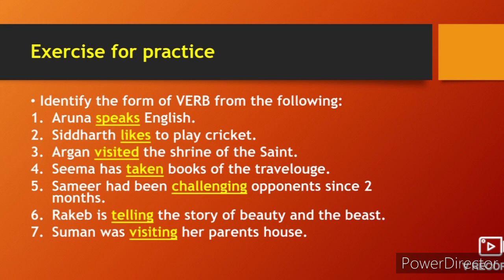Now let's look at an exercise for practice — identify the verb forms. Examples: Aruna speaks English. Siddharth likes to play cricket. Argan visited the shrine of the saint. Seema has taken books of the travel. Samir had been challenging opponents since two months. Harakev is telling the story of Beauty and the Beast. Someone was visiting her parents' house. The underlined yellow words are all verb forms.